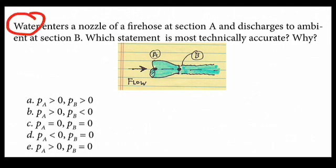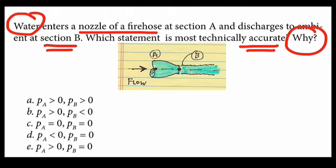We have water coming out the nozzle of a fire hose and discharging to ambient at section B. We're supposed to figure out which statement is most technically accurate and why. Let me talk about the right answer first.